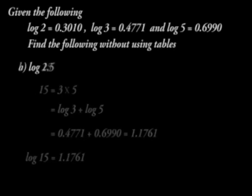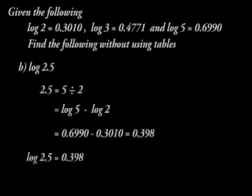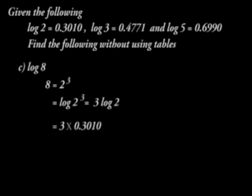2.5 is 5 divided by 2 and therefore, we subtract the logarithms of 2 and 5 to give us 0.398. 8 can be written as 2 raised to power 3 and therefore, we can multiply the log of 2 by 3 making it log 8 is equal to 0.9030.